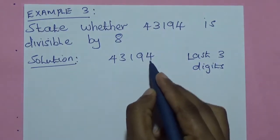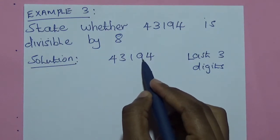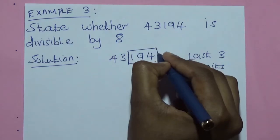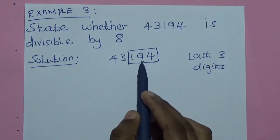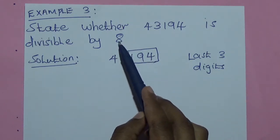So, starting on this side, the last three digits are 1, 9 and 4. We take those digits and we divide them by 8.